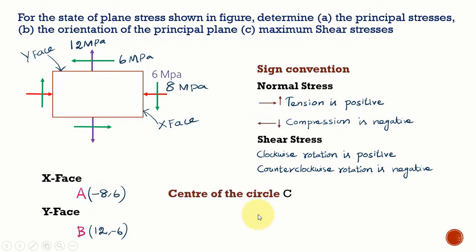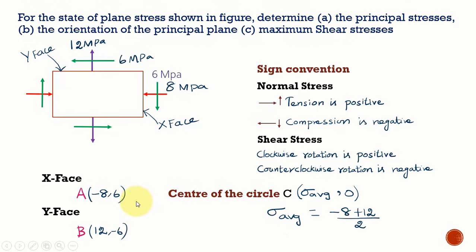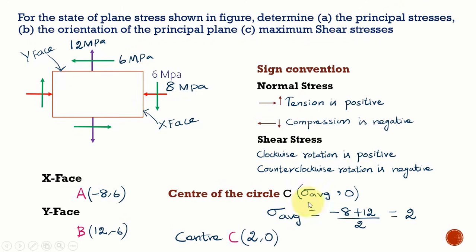Now we find the center of the Mohr's circle by calculating sigma average. We take the average of the two normal stresses: sigma average equals (minus 8 plus 12) divided by 2, which equals 2. So the center of the Mohr's circle is at (2, 0), because the shear stress component at the center must be 0.